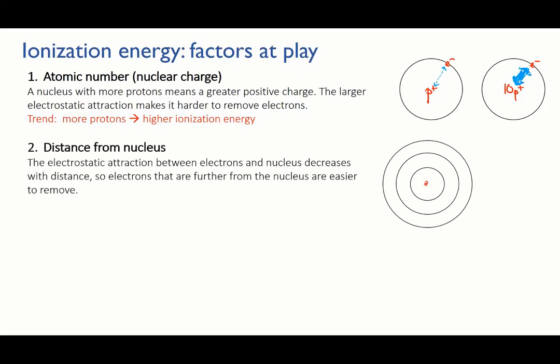Second is the distance from the nucleus. Electrostatic attractions get weaker as the opposite charges move further apart, rather like magnets. The further the electron is from the nucleus, or in other words the higher the energy level that it's in, the weaker the attraction and the easier it is to remove. So the higher the shell or level that the electron is in, the lower the ionization energy.